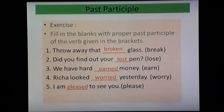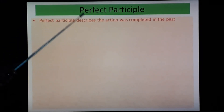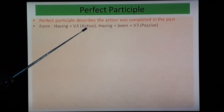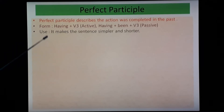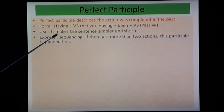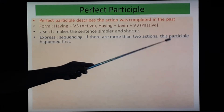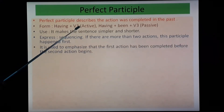Let's go to the next type: perfect participle. Perfect participle describes an action that was completed in the past. Structure: having plus V3 in active voice. If you are framing a passive sentence, then having plus being plus V3 form. It makes the sentence simpler and shorter. It shows sequencing — if there are more than two actions, this participle happens first. It emphasizes that the first action has been completed before the second action begins.